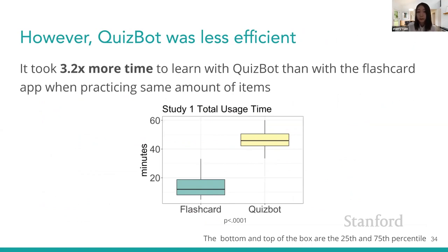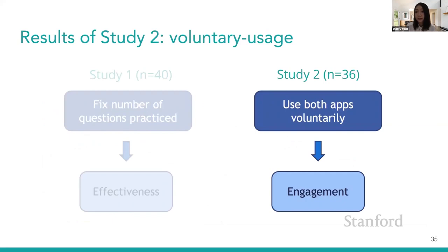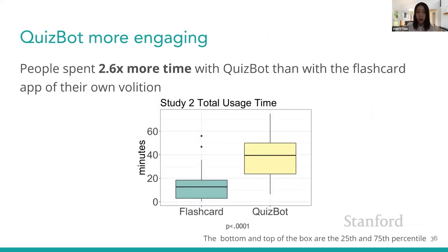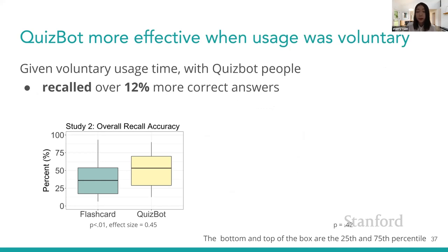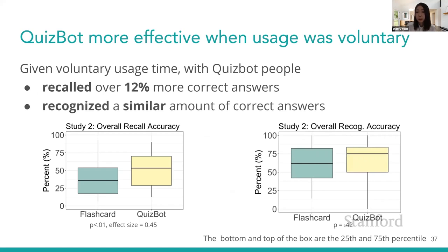However, QuizBot had its own drawback: it took 3.2 times more time for people to learn with QuizBot than with the flashcard app when practicing the same number of items. Despite this, people voluntarily spent 2.6 times more time with QuizBot than with the flashcard app of their own volition, and the difference in usage time was statistically significant. Because people voluntarily spent enough time on QuizBot, their recall performance was significantly better than when using the flashcard app, while recognition performance was similar.